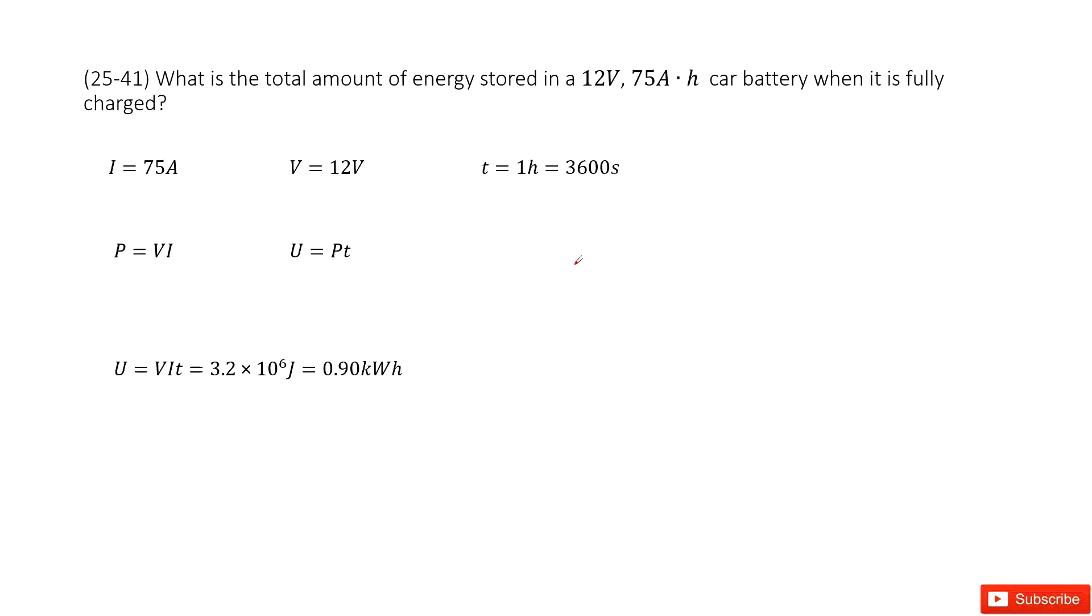There we need to find the energy stored in a battery. And this battery's voltage is given as 12 volts. And the current is 75 amps. And the time taking,